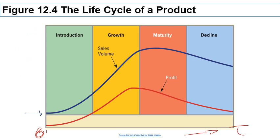You can see this cycle happening with all products. With computers, for example, you started with mainframes, then personal computers, then laptops, then maybe tablets and cell phones. Products mature over time, eventually find fewer users, and new products that serve the same need come along and replace them — just as the horse was eventually replaced by the automobile for transportation.